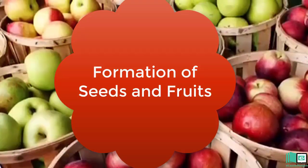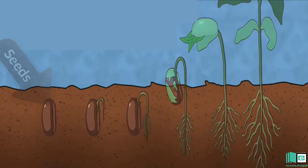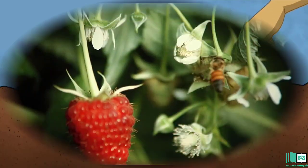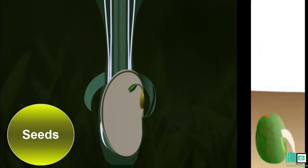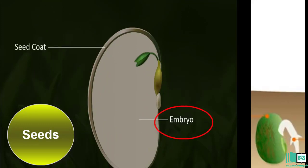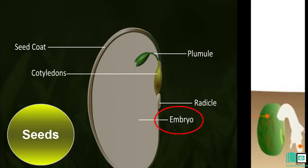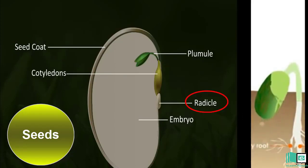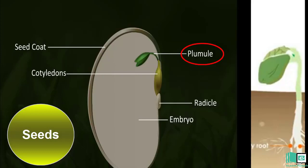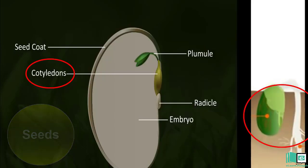Formation of Seeds and Fruits: Many plants grow and bear fruit to protect their seeds. A seed protects the embryo inside it. The shapes of seeds and fruits also help in their dispersal. After fertilization, an ovule becomes a seed. The embryo and its store of food are covered by a tough seed coat. The embryo consists of: Radicle — develops into the first root; Plumule — develops into the first shoot or stem; and Cotyledons — supply food to the first shoot of the new plant.